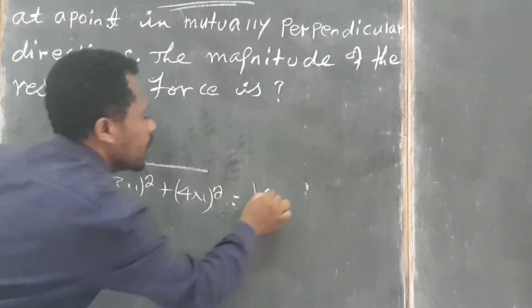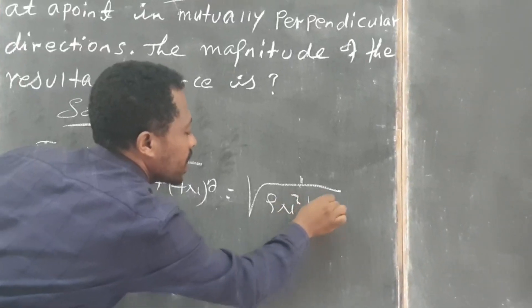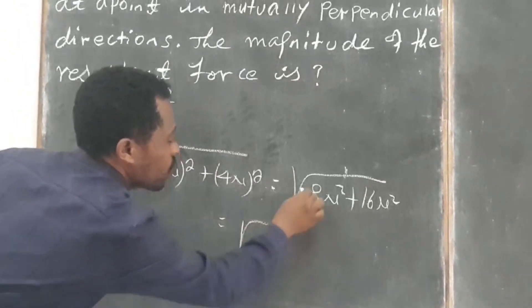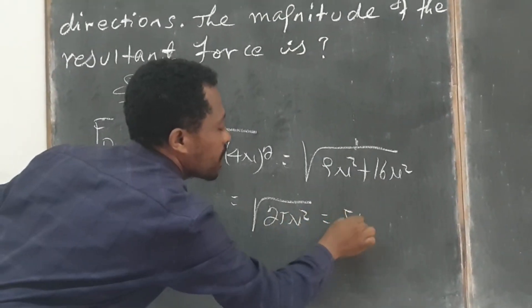And then it becomes 9 square of N plus 16 square of N. And then this becomes square root of 25 squared. And it becomes 5N.